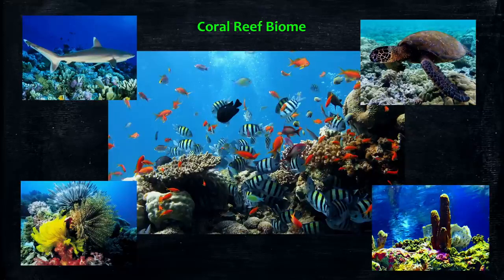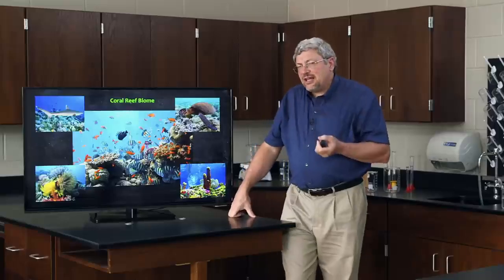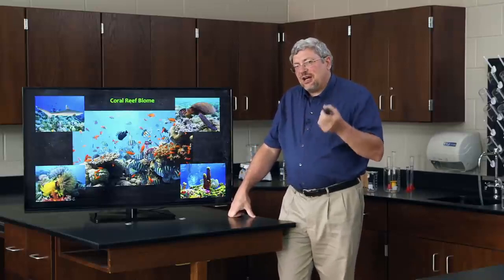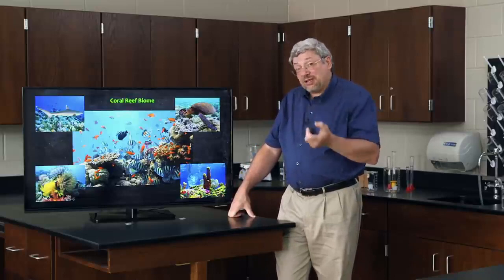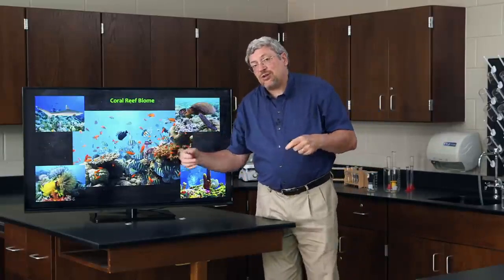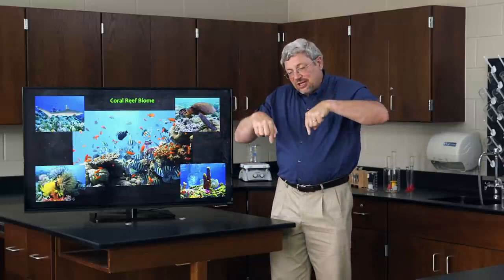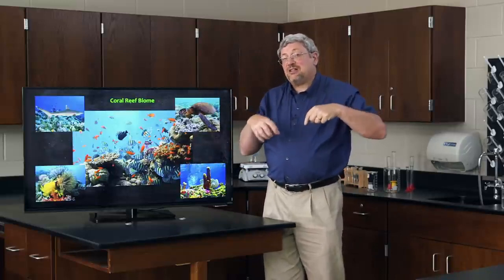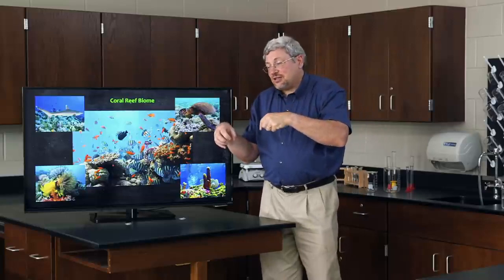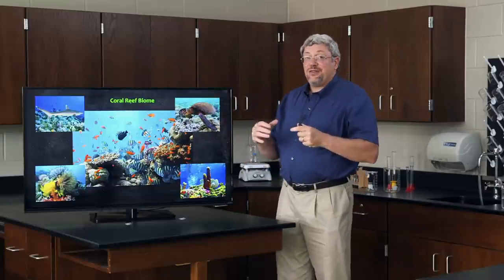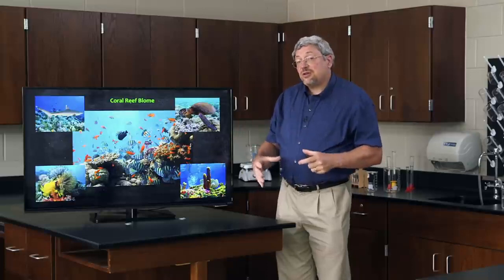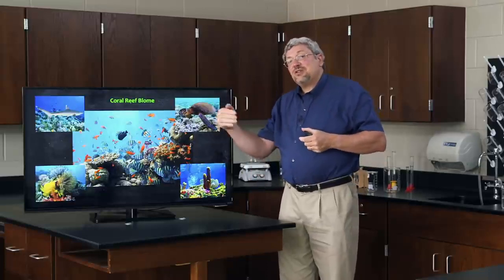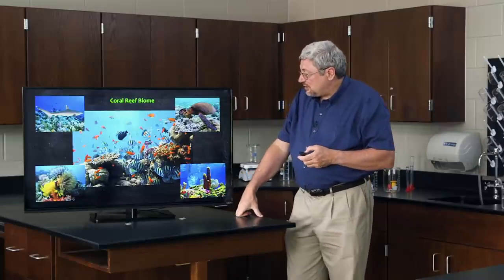Now these are animals so it might at first seem odd that they should grow upward like plants do. But the reason they do grow upward is they have plankton, they have algae living within the bodies of the coral and the sponges. And those organisms need sunlight. So the coral and sponges grow up towards the surface to give more light to the algae that live in their bodies.